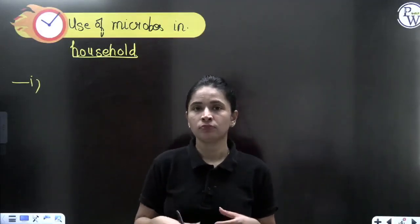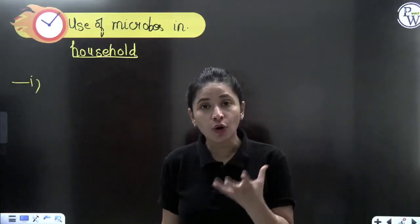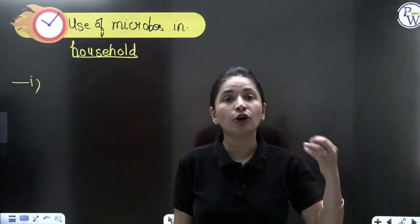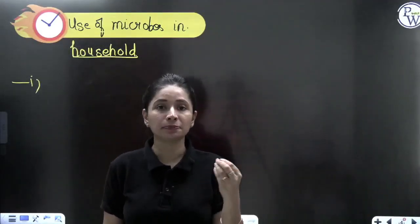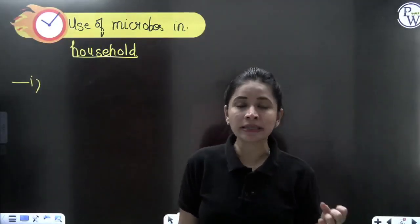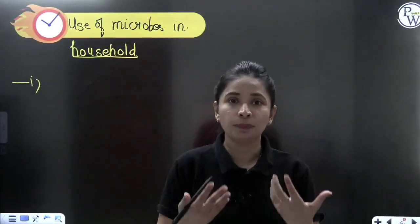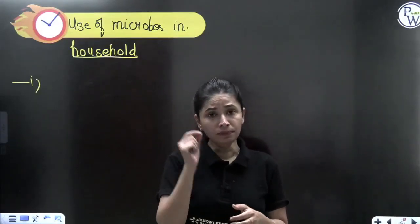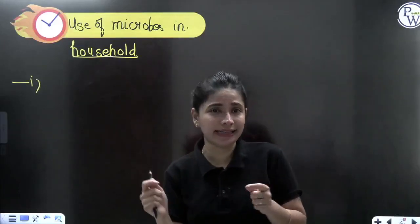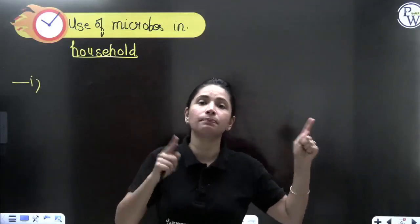Apart from curd, every day you enjoy breads, cakes, and pastries. The dough of bread prepared at factory level requires yeast for fermentation. Yeast is sprayed, it ferments the dough, and then the dough is ready to prepare bread. Similarly, at home when mummy cooks dosa and idli, the batter also has to be prepared one night before by grinding rice and dal together.